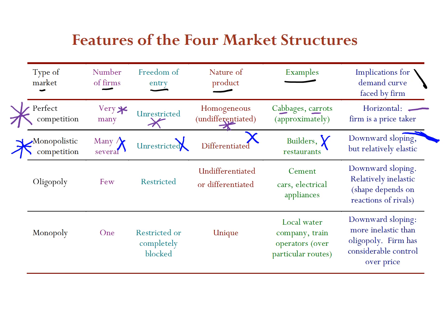Oligopoly is very interesting — there are only a few firms in the market. Because there are so few, they can collude and act as one, effectively becoming a monopoly. Think of it this way: perfect competition has lots of firms, monopolistic competition has several, and oligopoly you can count them — maybe three, four, five or six. These firms fight hard to restrict access so they can protect their profits.